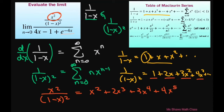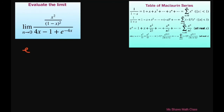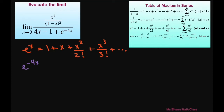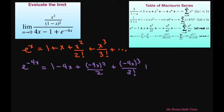Now that we have that, we're also going to need the Maclaurin series for e to the x. We get e to the power of x equals 1 plus x plus x squared divided by 2 factorial plus x cubed divided by 3 factorial plus so on. So now we want e to the power of negative 4x — you just substitute negative 4x in for x. That gives you 1 minus 4x plus negative 4x squared divided by 2, plus negative 4x cubed divided by 3 factorial, which is 6, and so on.